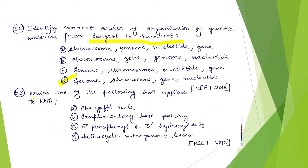Coming to question 53: which one of the following is not applicable to RNA? The correct answer is Chargaff's rule. Chargaff's rule is only applicable for DNA, where the number of adenine equals thymine (A = T) and guanine equals cytosine (G = C) in a double-stranded DNA. Since RNA is not double-stranded, Chargaff's rule is not applicable to RNA.